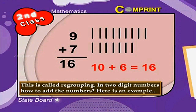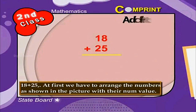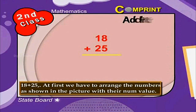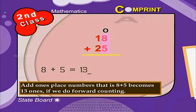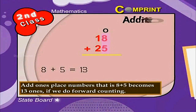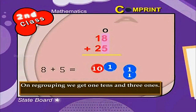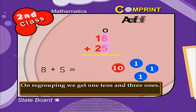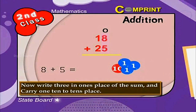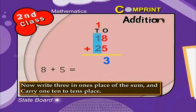In two digit numbers, how to add the numbers? Here is an example: 18 plus 29. First, we have to arrange the numbers as shown in the picture with their number values. Add the ones place numbers — that is 8 plus 5 becomes 13 ones if we do a forward counting. On regrouping, we get 1 ten and 3 ones. Write 3 in the ones place of the sum and carry 1 ten to the tens place.